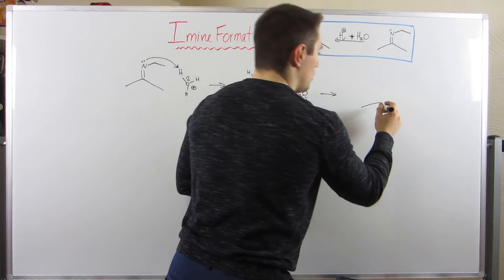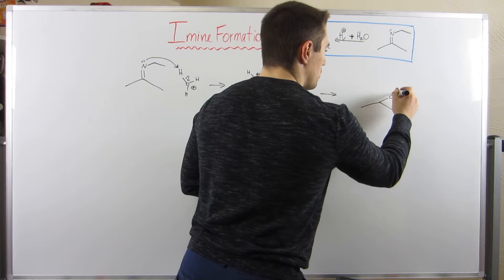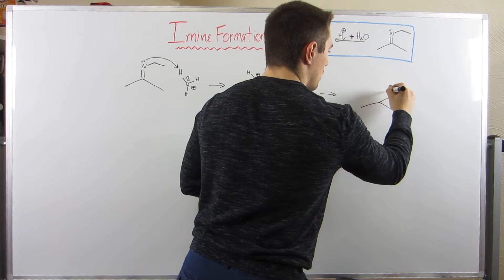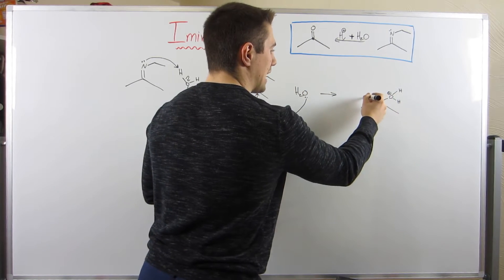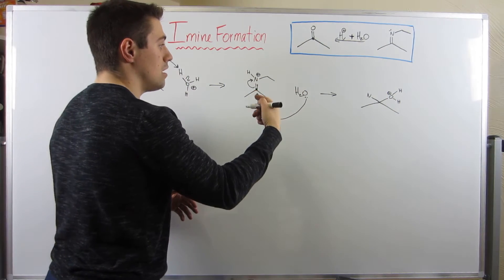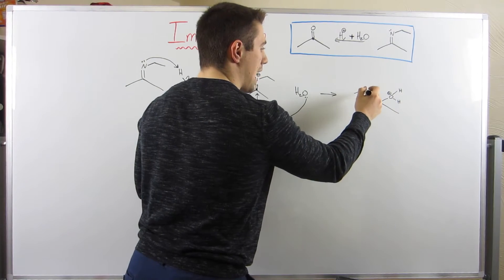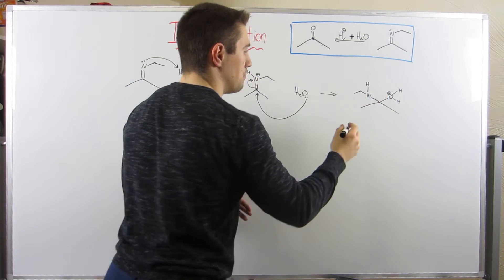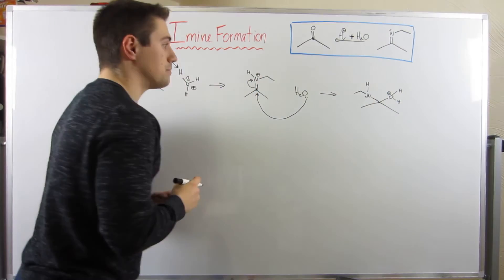So I'm going to draw the OH2, the water we just added over here, and I'm going to draw that big nasty nitrogen piece to the left, because we have an ethyl group attached and a hydrogen, and that electron pair.